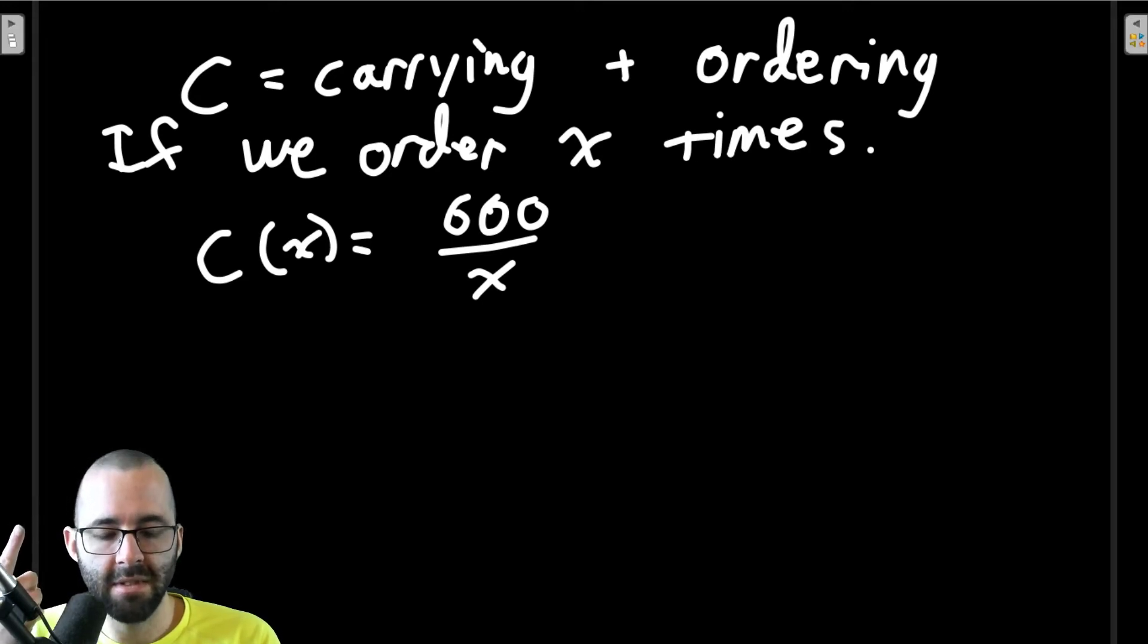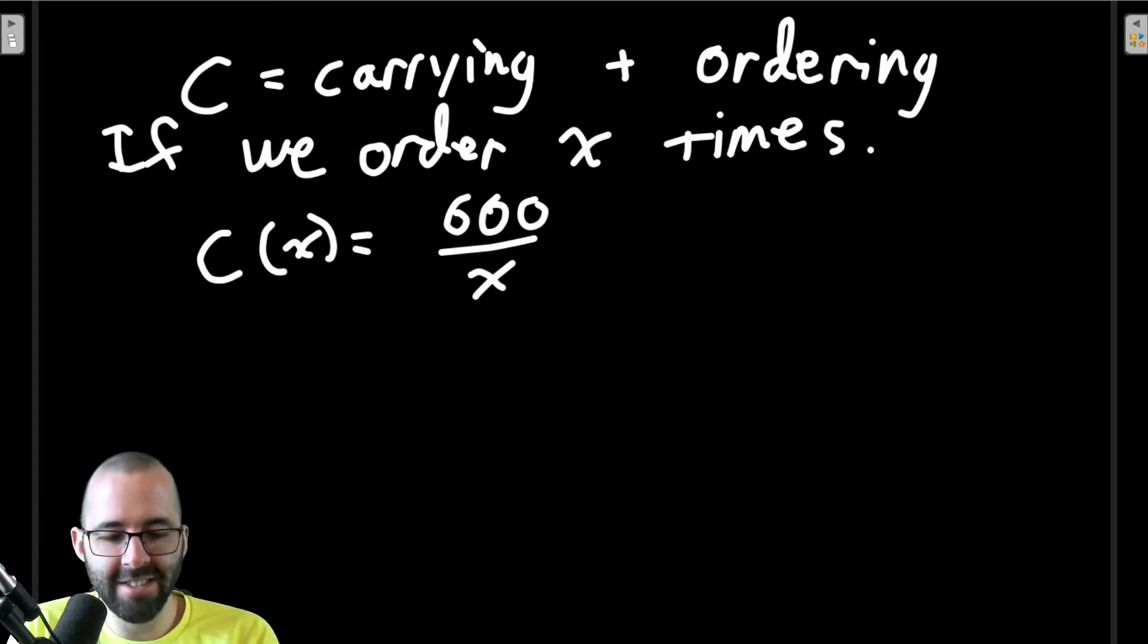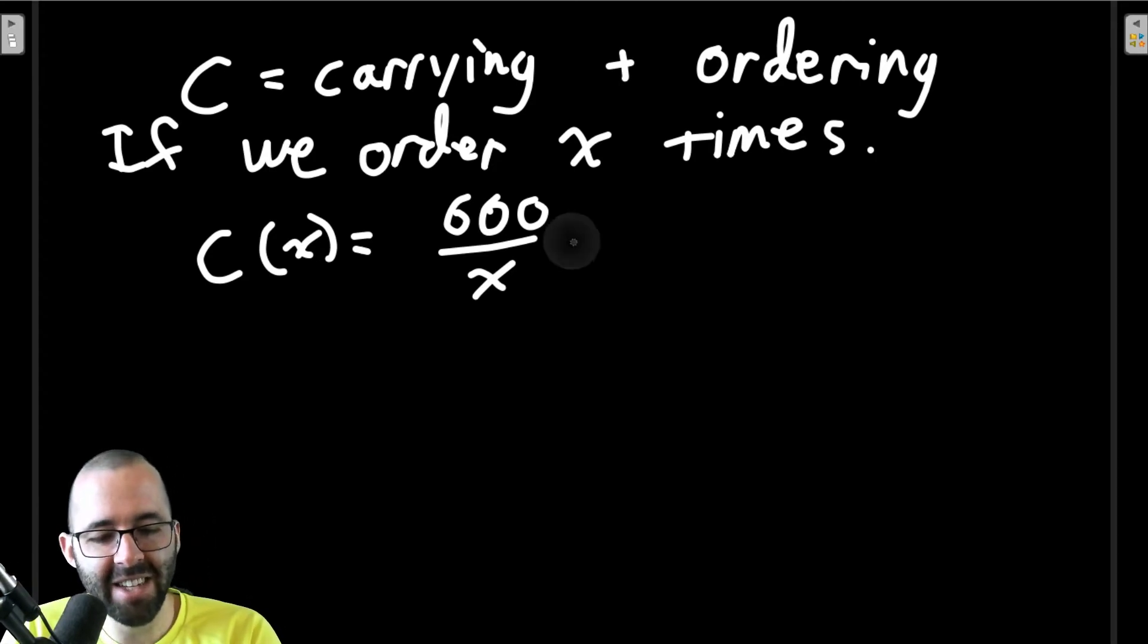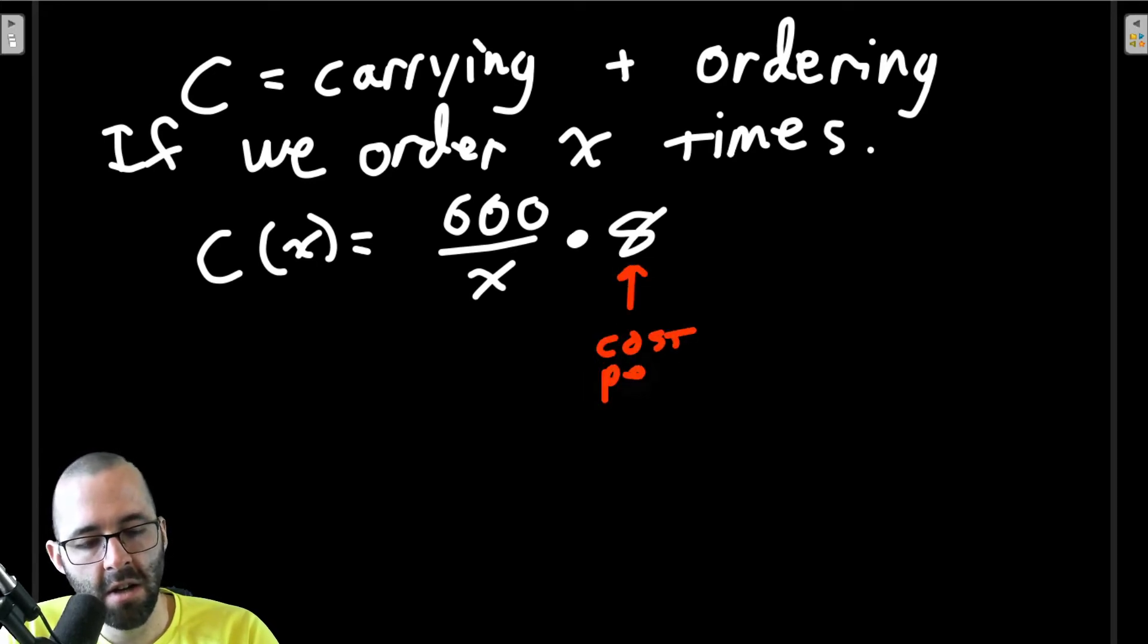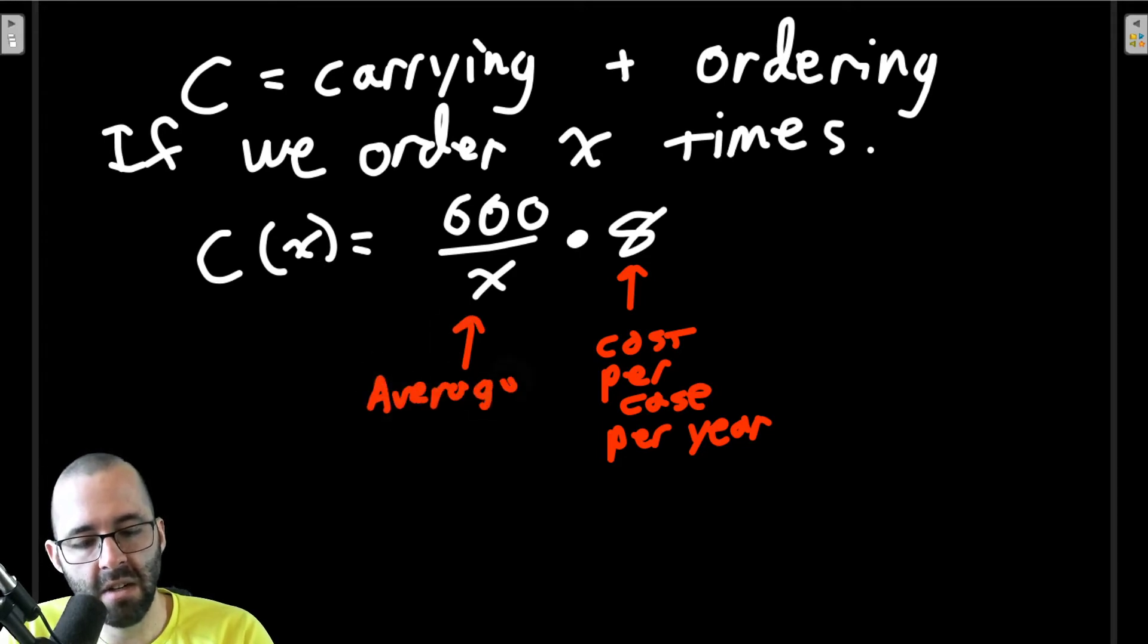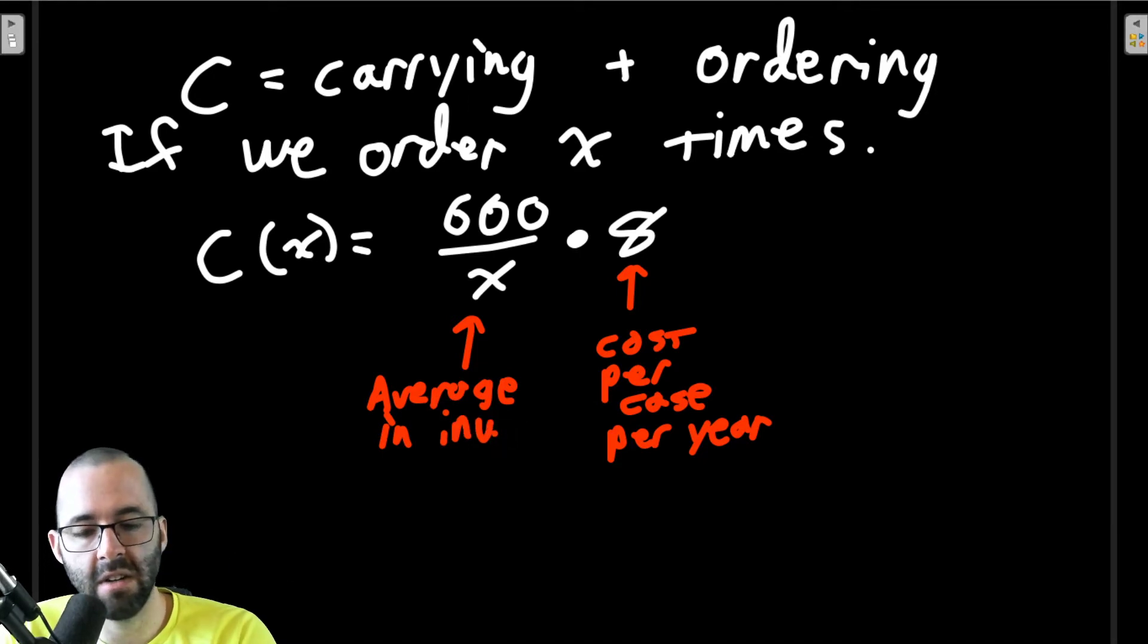Times 8. I have to remember Example 1 too and I just recorded it. What was this? This is the cost per case per year, and this was the average inventory. We found this in Example 1, so that's our carrying cost.